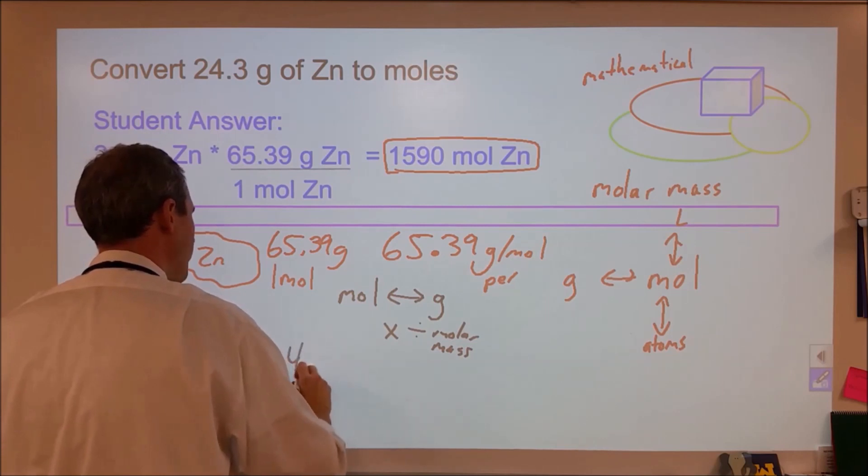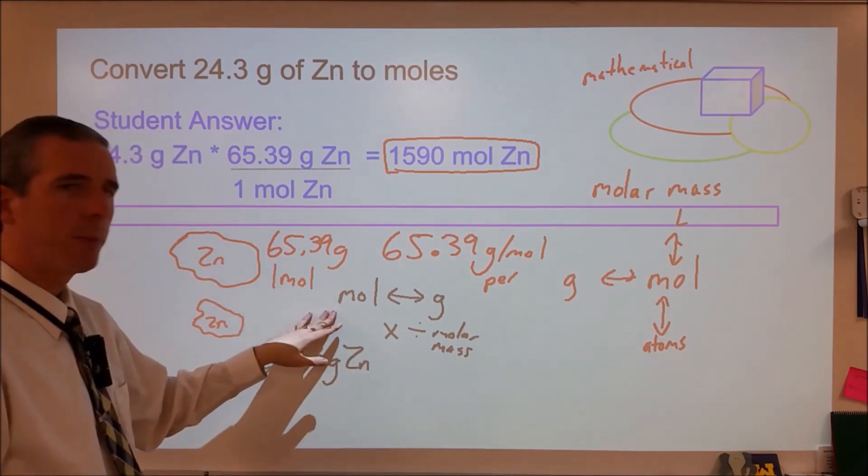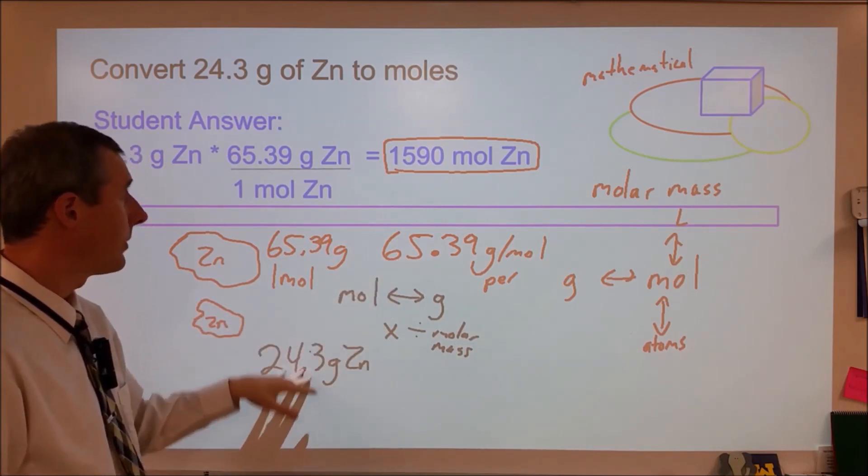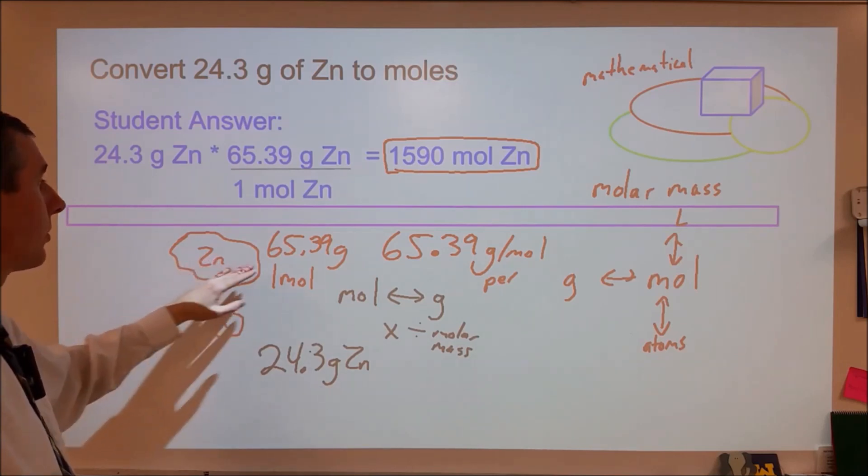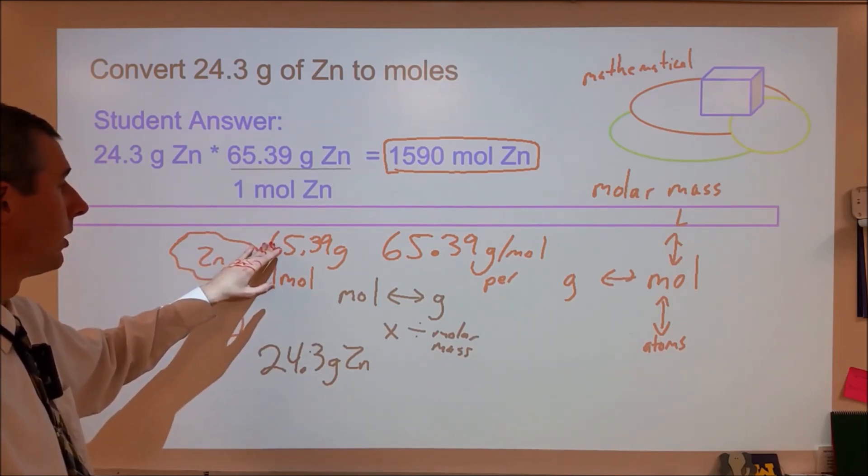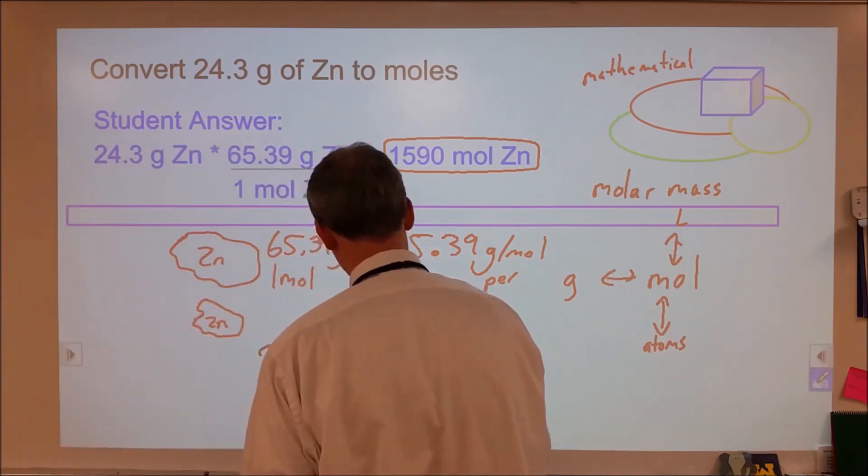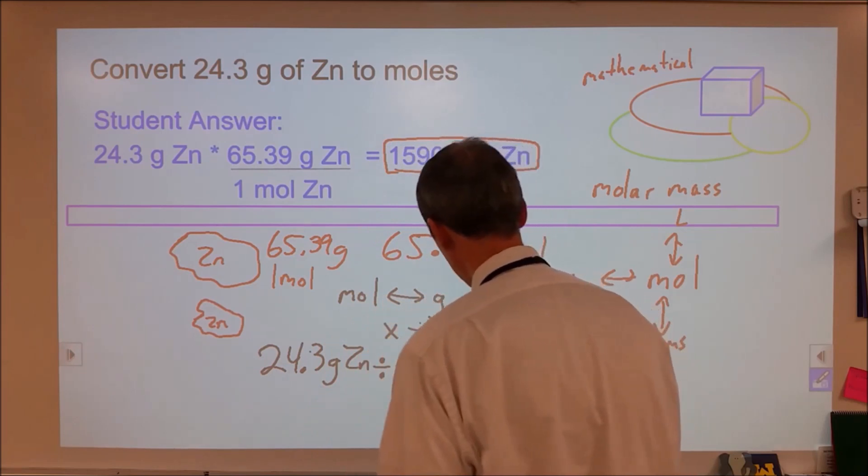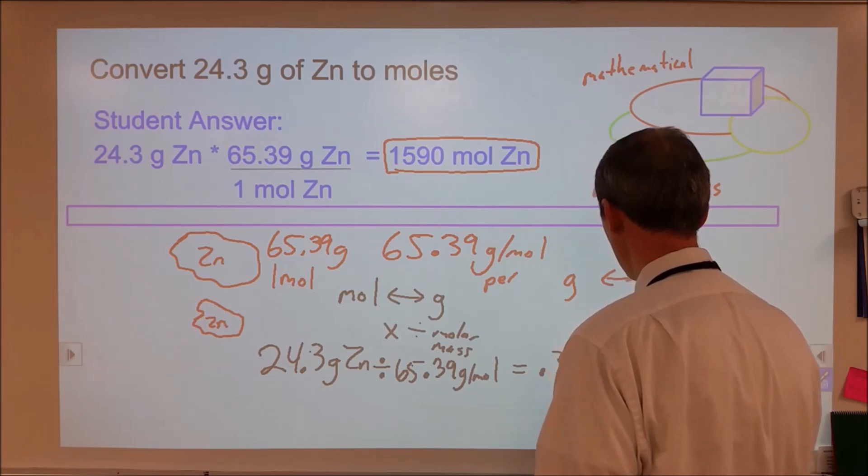So in this particular case, I have 24.3 grams of zinc. Should I be multiplying or dividing by 65.39? So if I multiply by this, I get 1,600 moles. That doesn't make any sense for the fact that I'm starting with less than a mole, obviously. Instead, I should be dividing by that amount, which gives me an answer of 0.372.